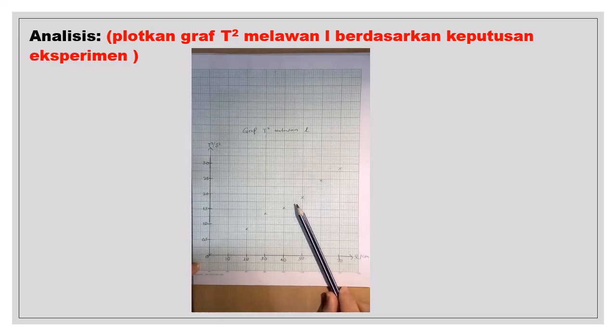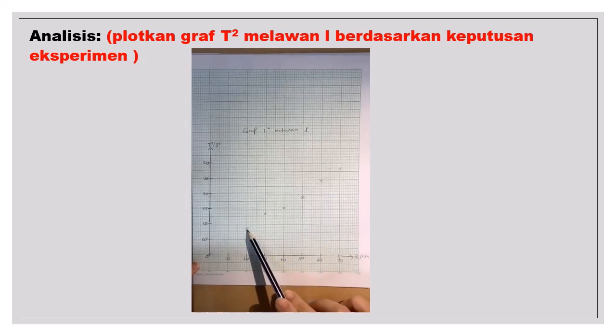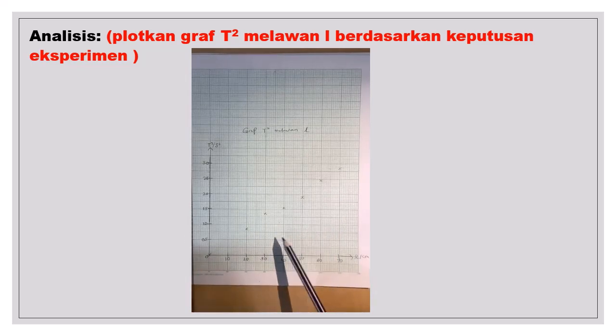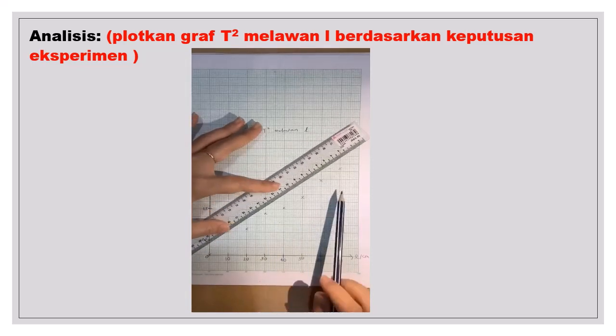Jadi ini adalah salah satu contoh yang titik yang telah diplokkan berdasarkan bacaan eksperimen. Jadi kamu lihatkan di sini ada 1, 2, 3, 4, 5, 6. 6 bacaan merujukkan kepada jadual tadi. Kamu boleh lihat di sini. Kalau kamu lihatkan semua titik ini, memang dia tidak boleh mempentukkan satu garisan lurus yang menyambungkan semua 6 titik ini.